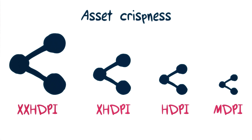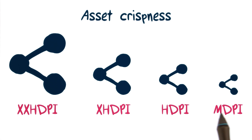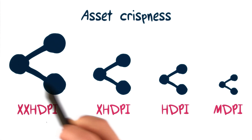While you should generally provide assets for all the major density buckets, it's normally okay to just include XHDPI or XXHDPI assets and let Android scale them down or downsample them. It's not ideal, but if you had to pick one, provide the higher density assets and not just the lower ones.